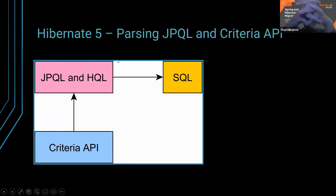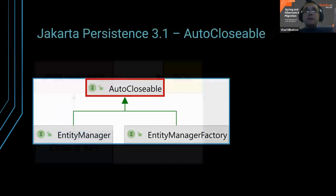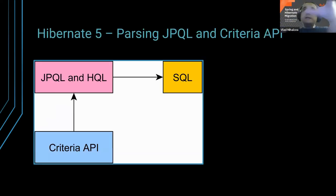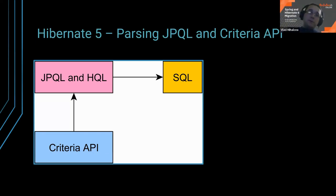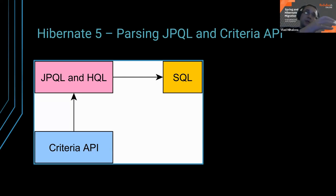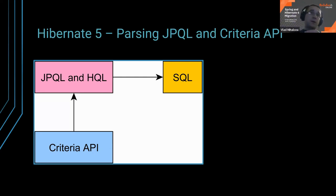Related to the query parser: in Hibernate 5, JPQL and Criteria API were parsed differently. Criteria API would generate a JPQL string, which then had to be parsed — Hibernate would parse it, create an abstract syntax tree, traverse it, and generate the database-specific SQL query. That's how the Hibernate 5 parser used to work.